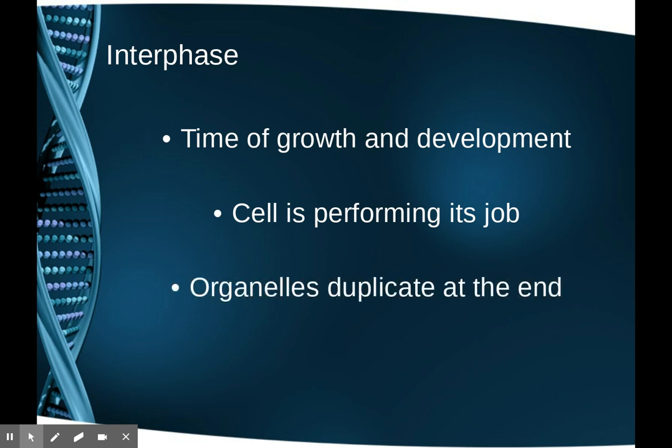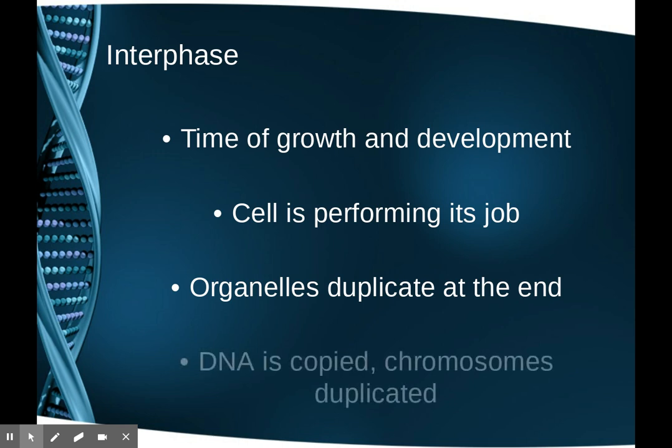At the very end of interphase, the organelles duplicate. Since the cell is going to split into two, both baby cells need all of their organelles. Then, finally, at the end of interphase, DNA is copied and the chromosomes are duplicated.